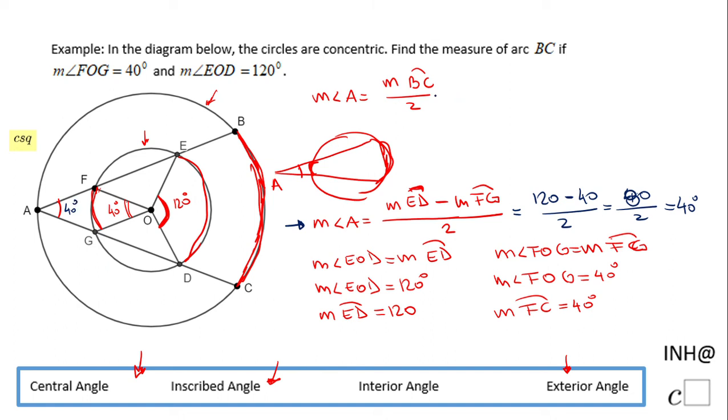And this one here is 40 degrees. Now we can go back here on the first relation, and I'm going to replace the measure of angle A with 40 degrees. And for finding the measure of arc BC, I just have to multiply by two both sides. And I get the measure of arc BC is nothing else than 80 degrees.